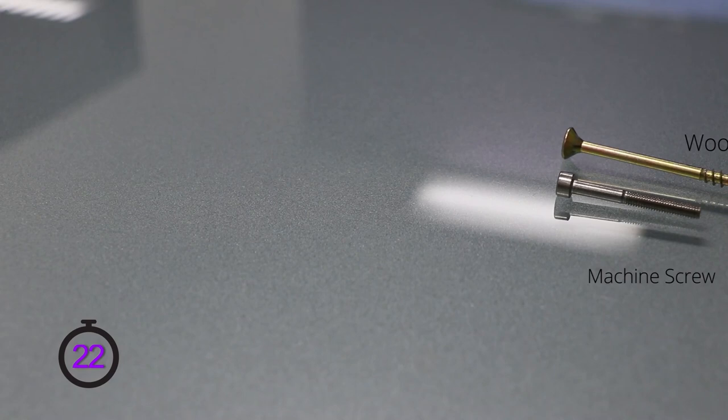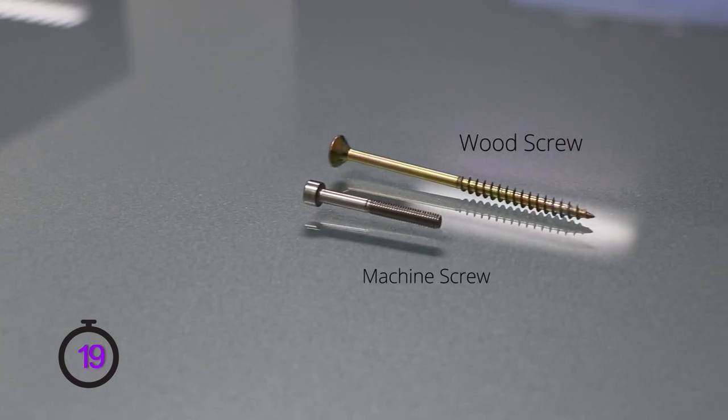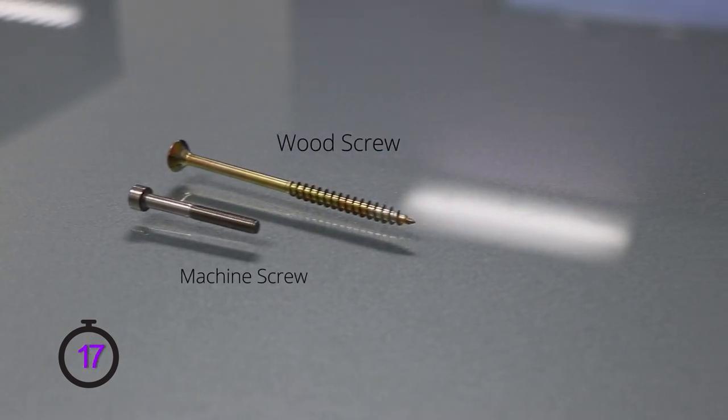To start off, most people are familiar with your standard machine screw or your multi-purpose wood drywall type screw. Now if you have a machine screw and you have threaded inserts, it's a great option. But let's say that you don't have the threaded inserts, then you're going to want to use something that does have a coarse thread like a wood screw.